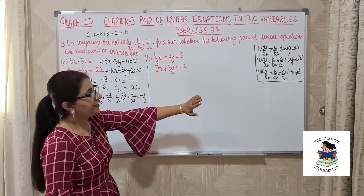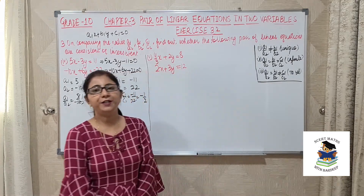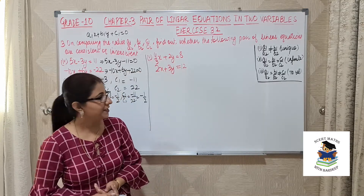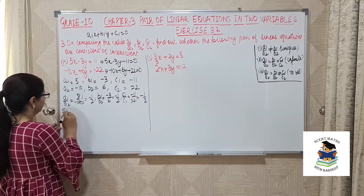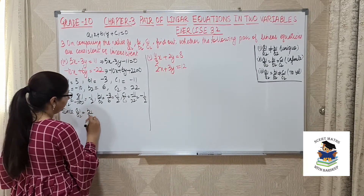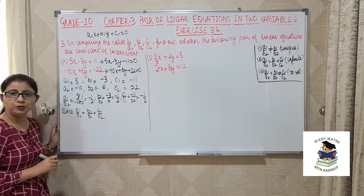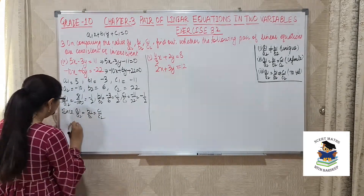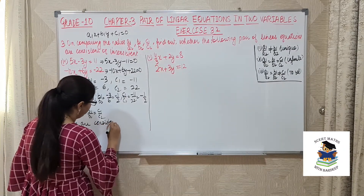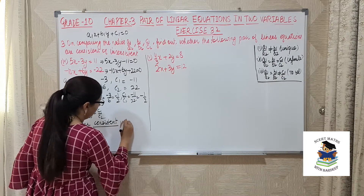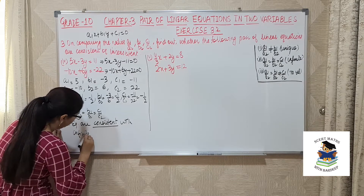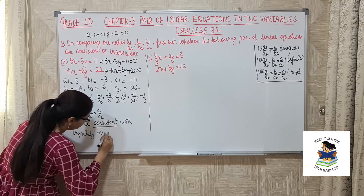All three ratios are equal — this is our second case. All ratios equal means infinitely many solutions, which means the equations are consistent. Since a1/a2 = b1/b2 = c1/c2, therefore the equations are consistent with infinitely many solutions.